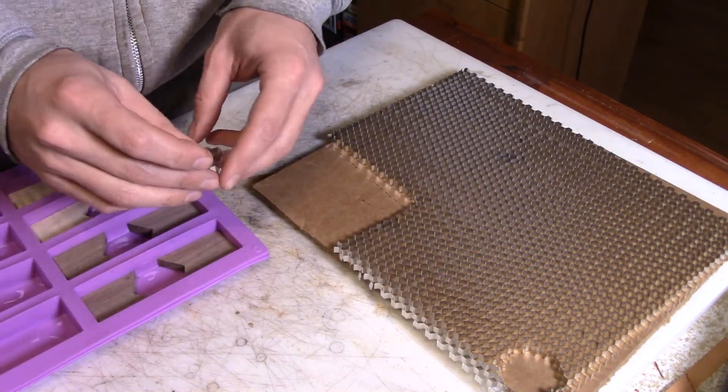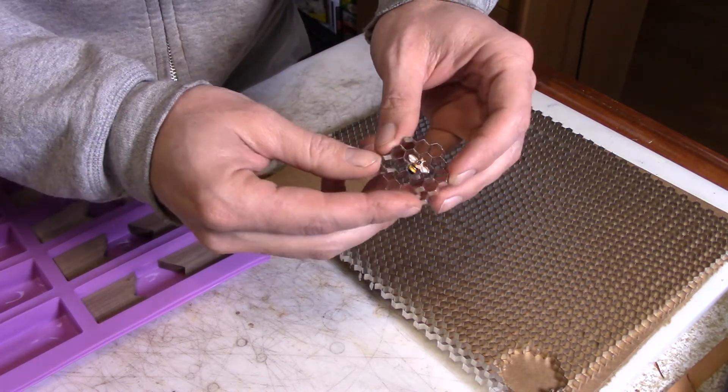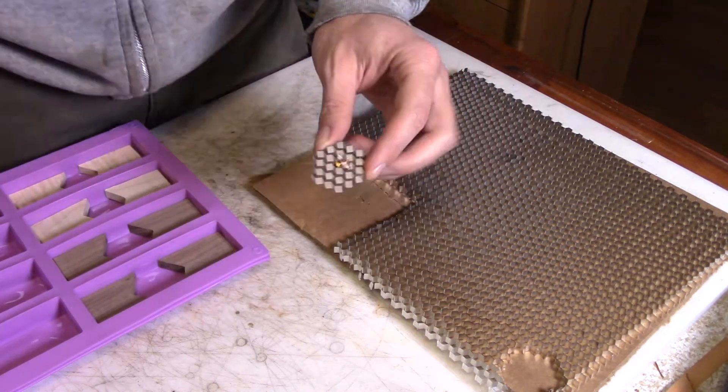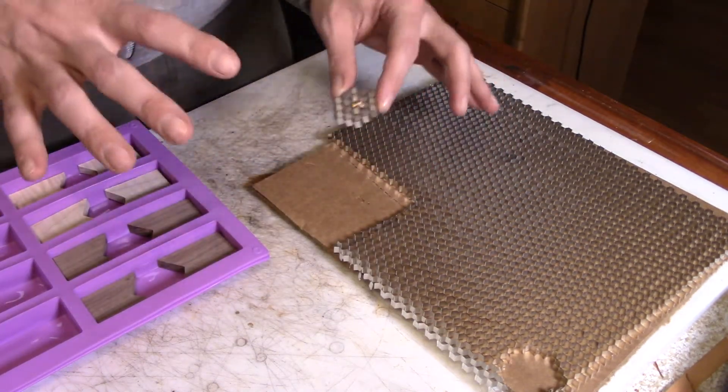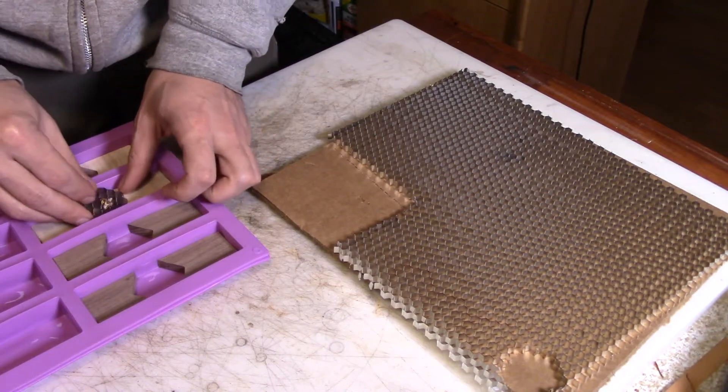But I also have some little bees that I'm going to set in here. I'll go ahead and grind away some of the material and set them in there. Then we'll mix up some resin that looks like honey and fill it all in, and we should have some honeycomb scales to put on a knife.